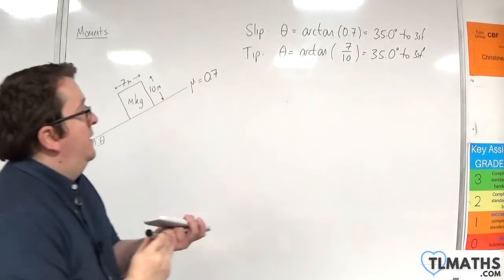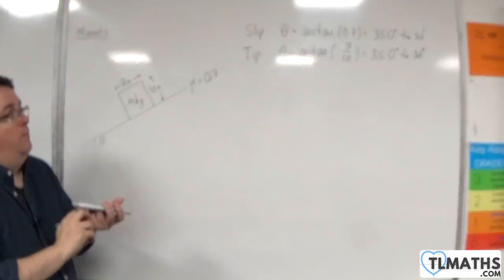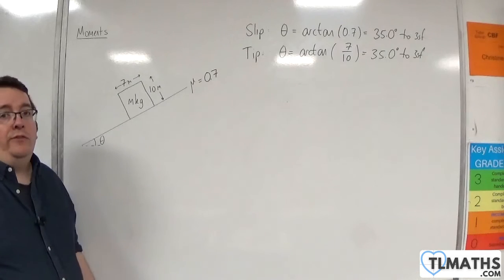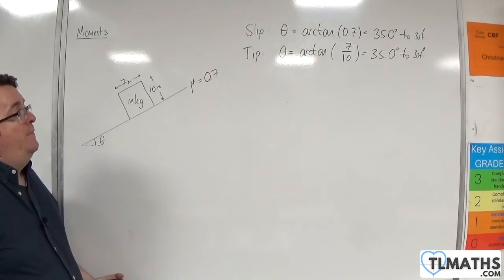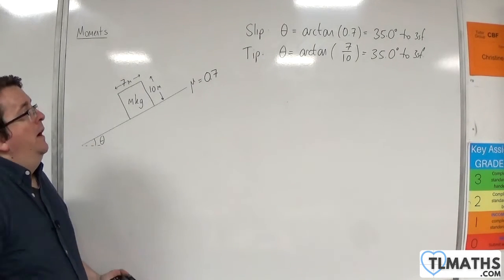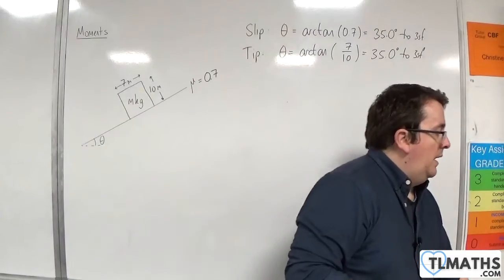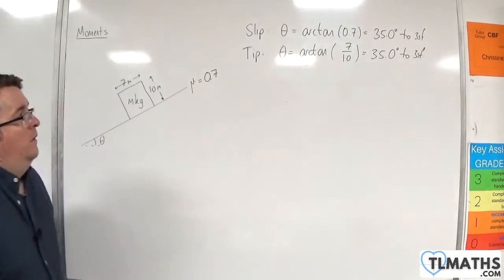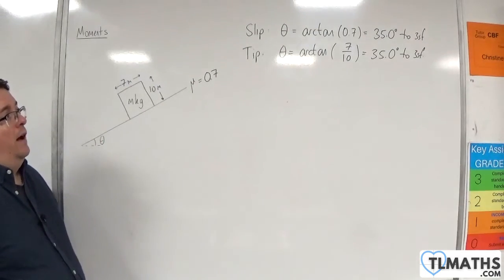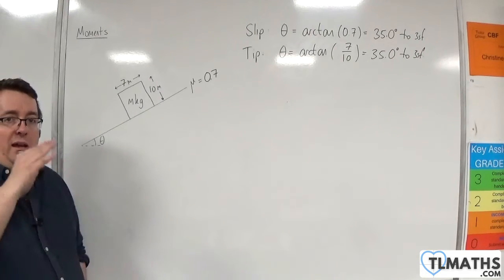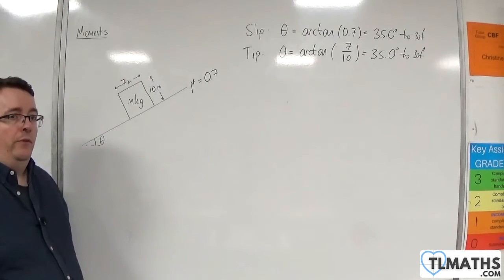So as the angle theta is steadily increased, there won't be a moment where it starts slipping down the slope. It will start to tip. The tipping here is clearly going to happen at exactly the same time, so there won't be any point where it will slip. It will tip first.